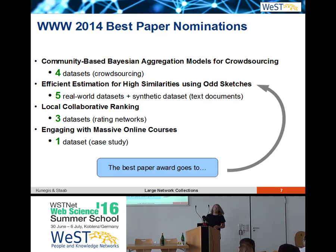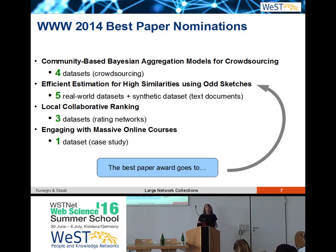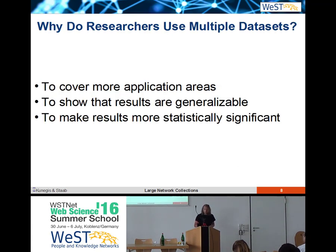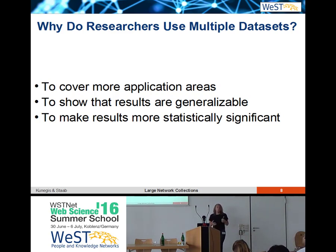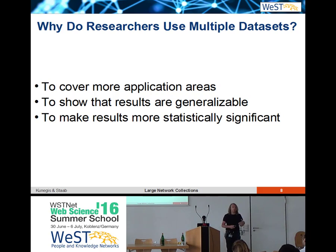It was the paper with five datasets. Of course this is just a little anecdote, but having good datasets — and even multiple datasets — is a good thing when doing research on websites or online social media. One reason is you could analyze several different application areas. Maybe you're looking at one social network of people gaming online together, but you also want to look at people doing something serious online, getting more insight by comparing them rather than just having one dataset.